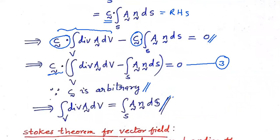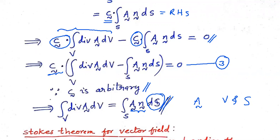This is the Gauss Divergence Theorem for a tensor field A defined on V and S, where V is the volume and S is the surface bounding that volume. It means any volume integral of divergence A can be converted into a surface integral A N dS, where N is the unit outward normal of the surface element dS. This is very simple and easy. In the next class, we are going to prove Stokes' theorem for a tensor field.